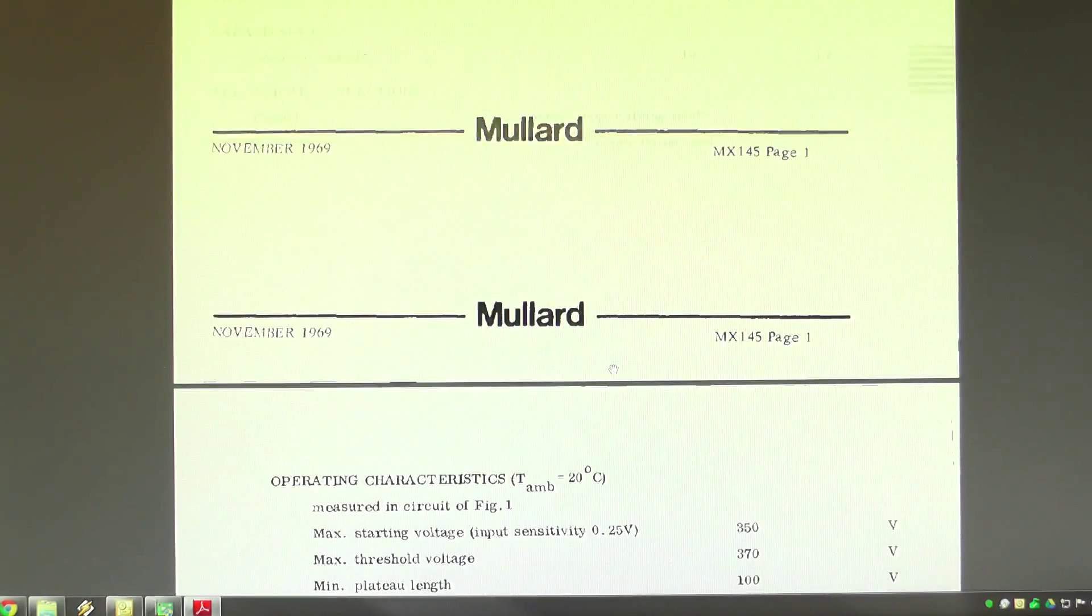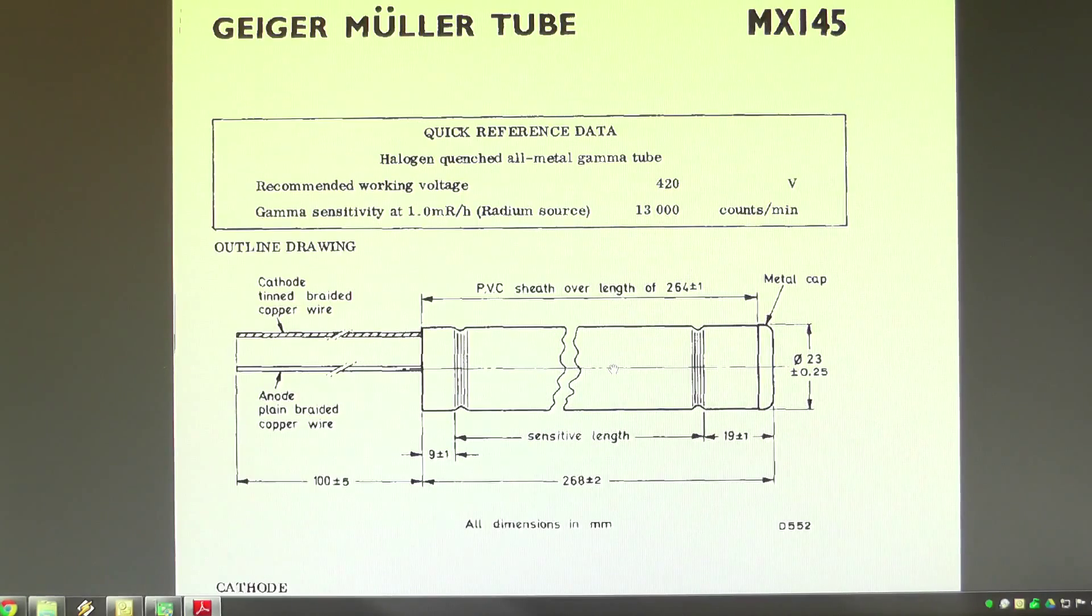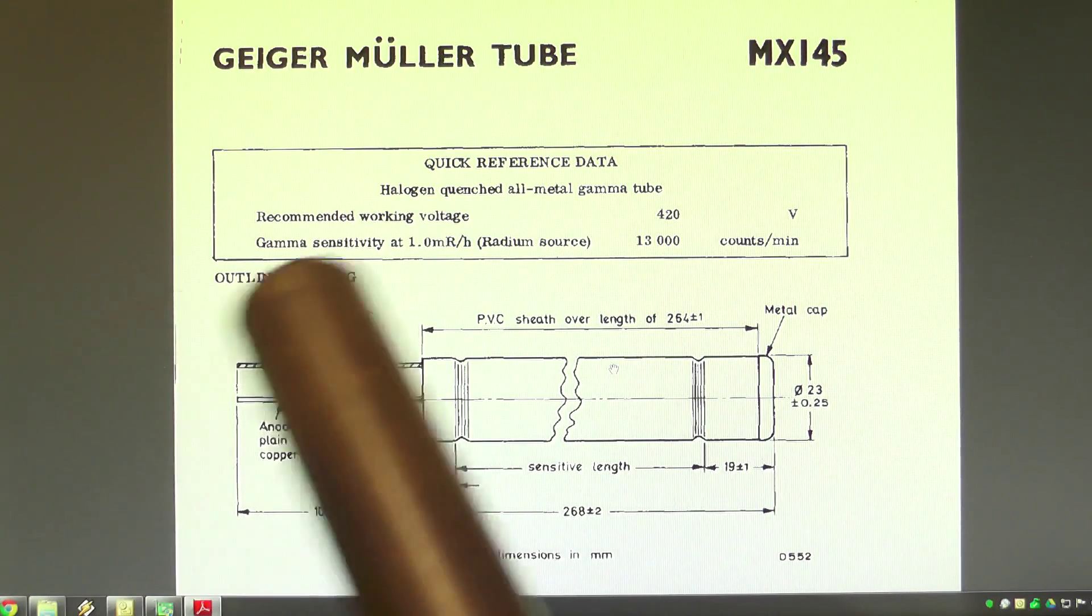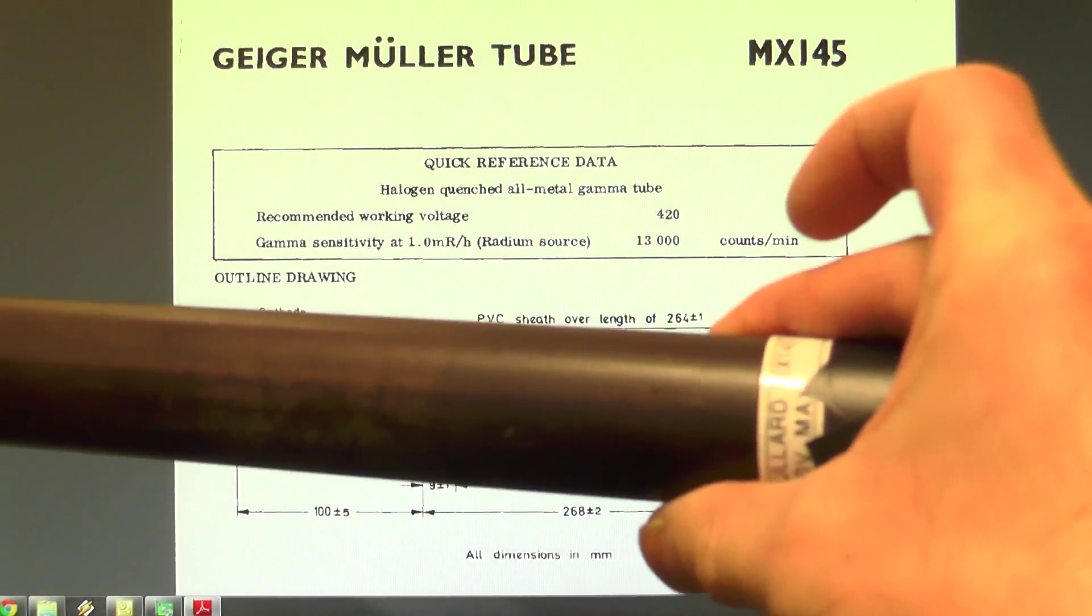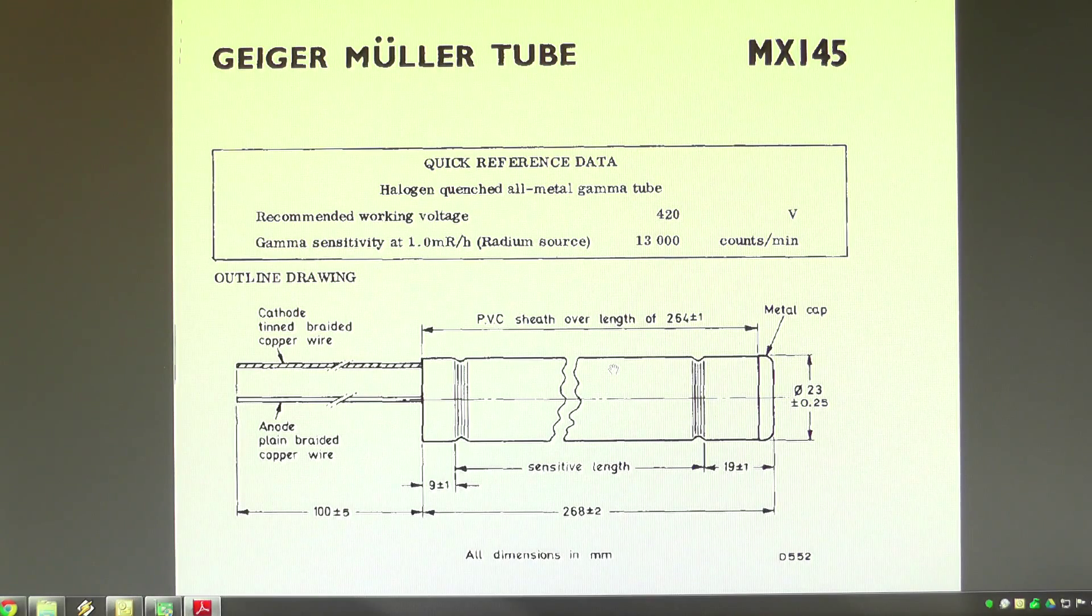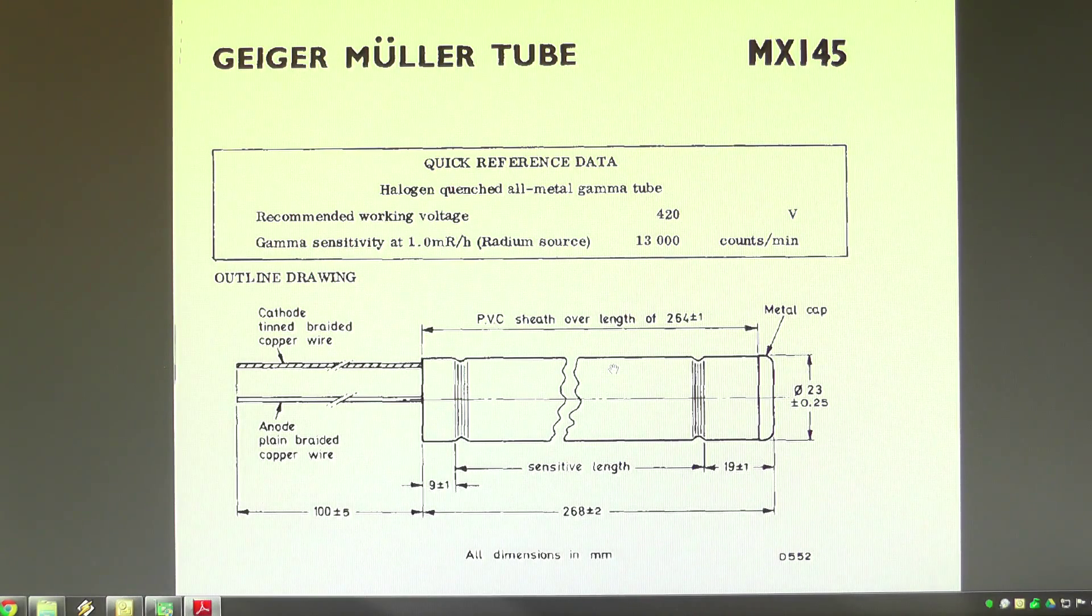Now the other thing that I did actually find in this manual which relates to the fact that this tube originally came, if you saw my original tear down, it came with sections of tin plate wrapped around the tube. At the time I didn't really understand what this was about. Now while I was reading this technical document I came across a particular section in it about screening.